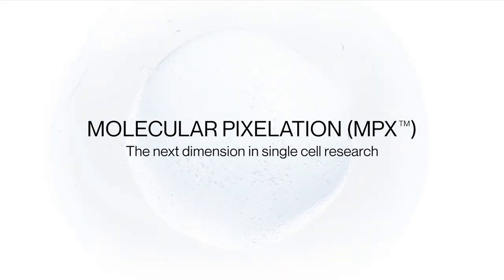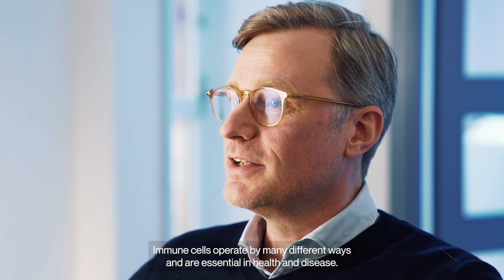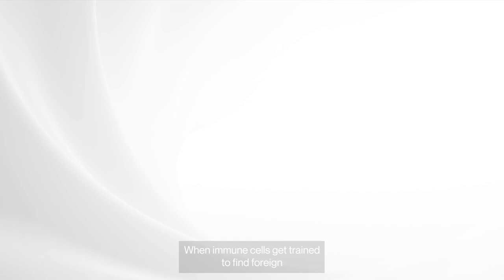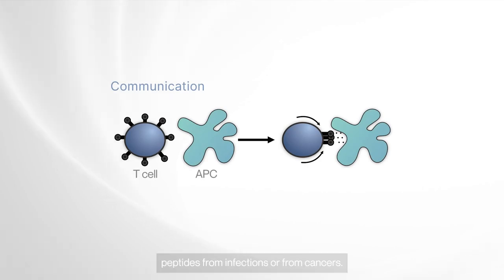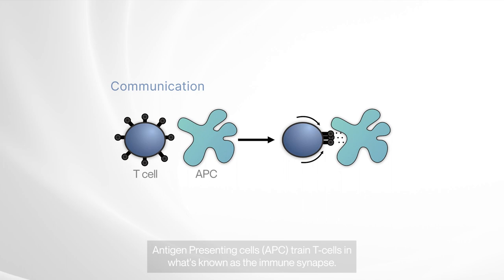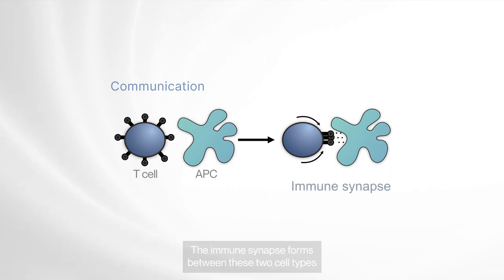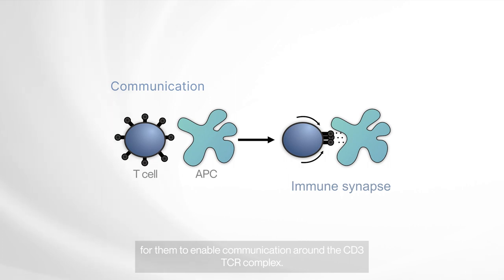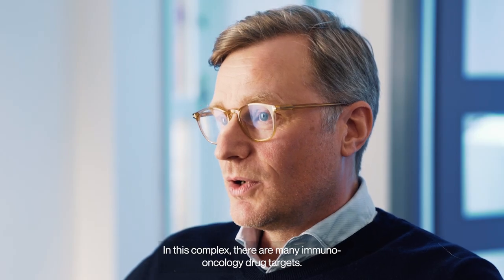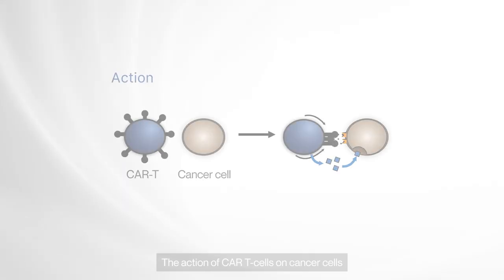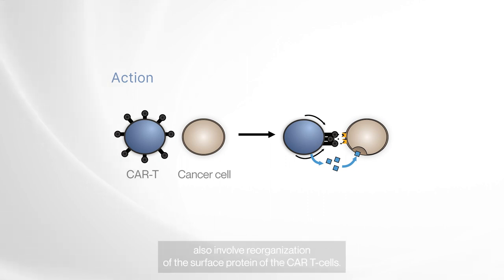How do you study immune cells? Immune cells operate by many different ways and are essential in health and disease. When immune cells get trained to find foreign peptides from infections or from cancers, antigen-presenting cells train T cells in what's known as the immune synapse. The immune synapse forms between these two cell types to enable communication around the CD3 TCR complex, in which there are many immuno-oncology drug targets.